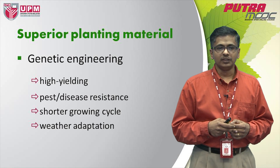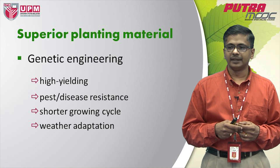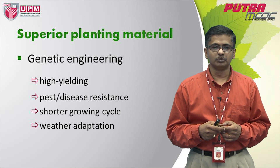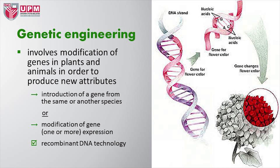So genetic engineering involves modification of genes in plants and animals in order to produce new attributes. What is really happening is a gene from the same species or another species is being introduced to the target plant or organism, or there is a modification to gene expression, and this gene could be either one or more.